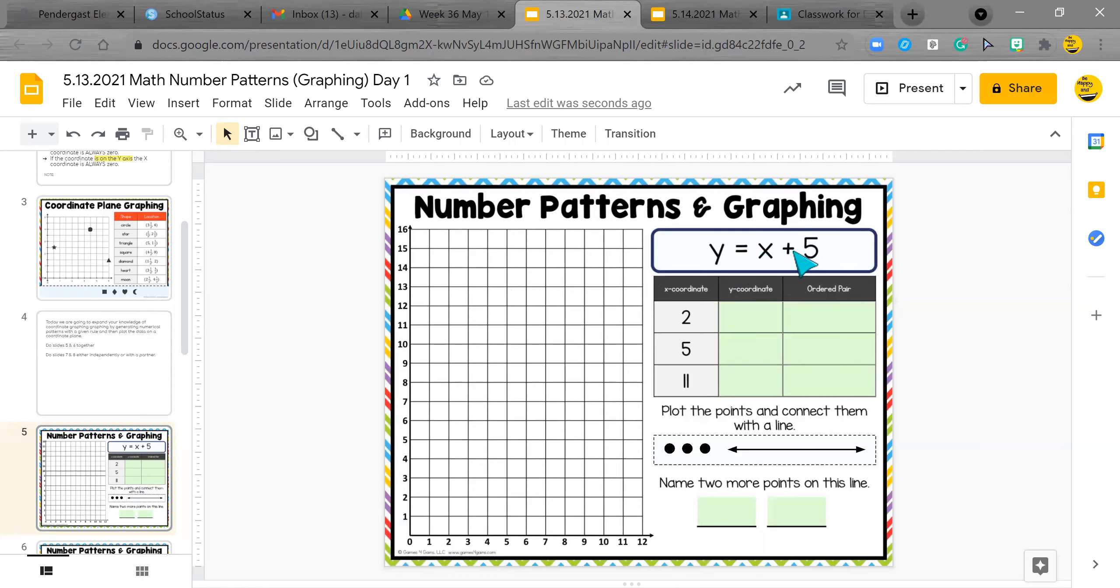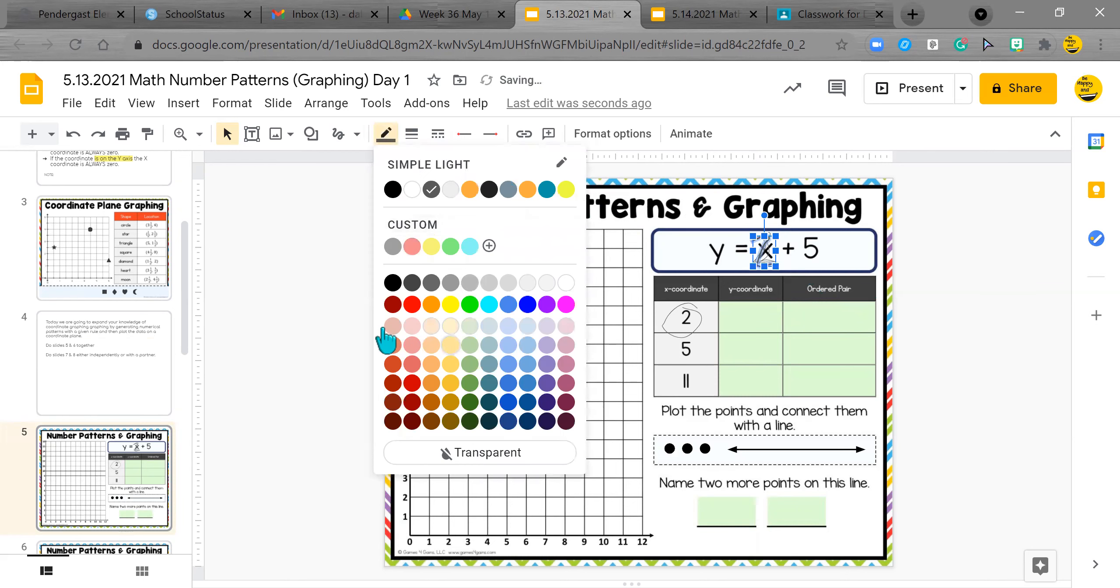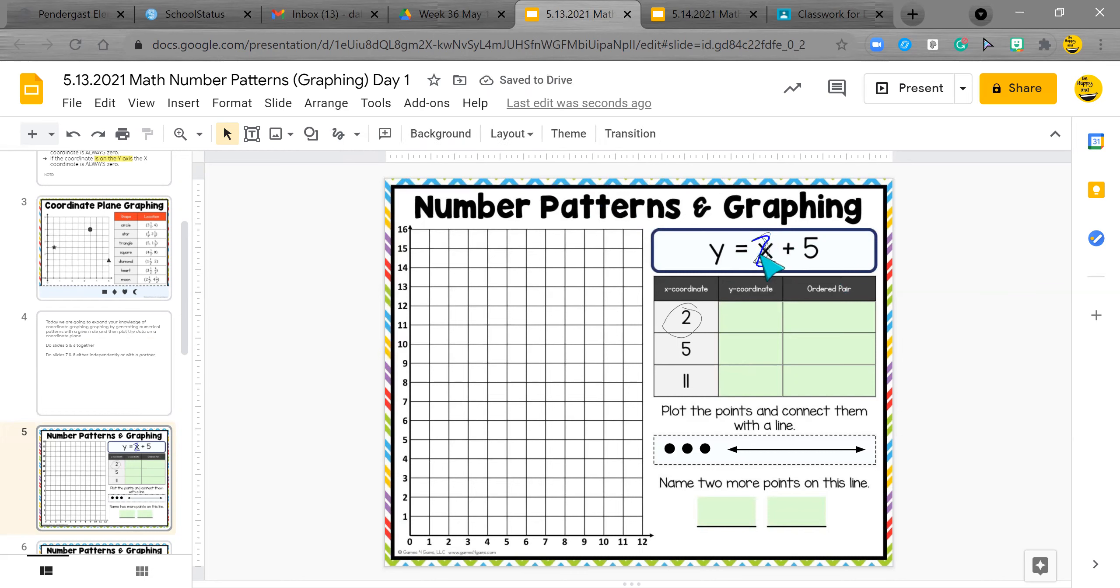So here we have y equals x plus five. Now what's great about this is we're going to take this two right here. We're going to put that two right over here with the x's. We're going to put it there. So we do two plus five. Yes, it's seven. And our ordered pair would be two, seven.